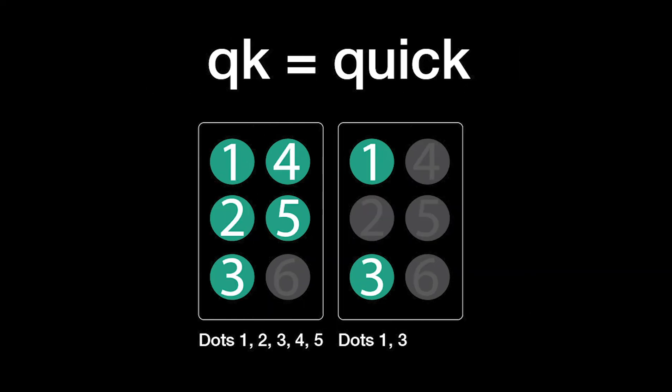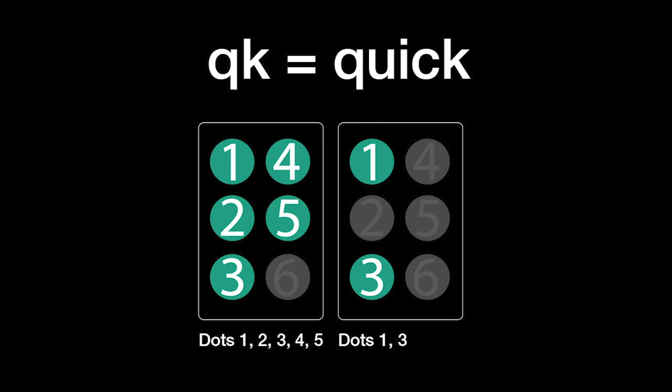Quick is Q-K: dots 1, 2, 3, 4, and 5, plus dots 1 and 3. Receive is R-C-V: dots 1, 2, 3, and 5, plus dots 1 and 4, plus dots 1, 2, 3, and 6.